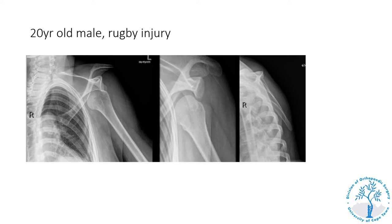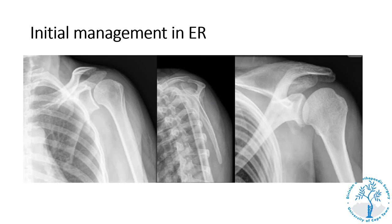The next case is a 20-year-old male rugby player who injured his left shoulder and presents with an anterior dislocation of the glenohumeral joint. On the series of X-rays you can see the anterior dislocation. On the modified axillary view, the humeral head is dislocated anteriorly towards the rib cage. Also important to note is a small impression fracture where the humeral head pushes against the glenoid — that is called a Hill-Sachs lesion. The dislocation was reduced in the ER and post-reduction X-rays confirm a concentric reduction.